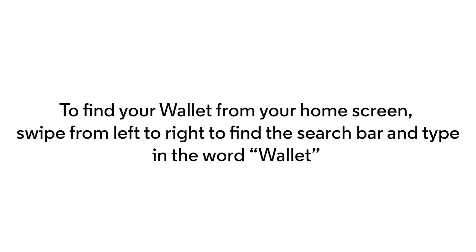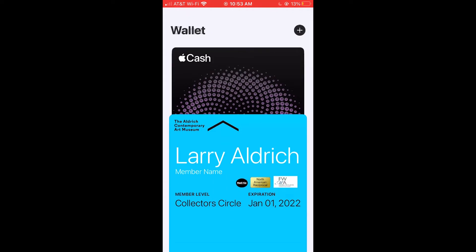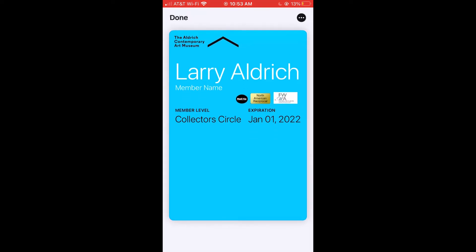To locate your wallet from your home screen, swipe from left to right to see the search bar and type in the word Wallet. Your Aldridge membership card will be in your wallet. Tap on the card to open it.